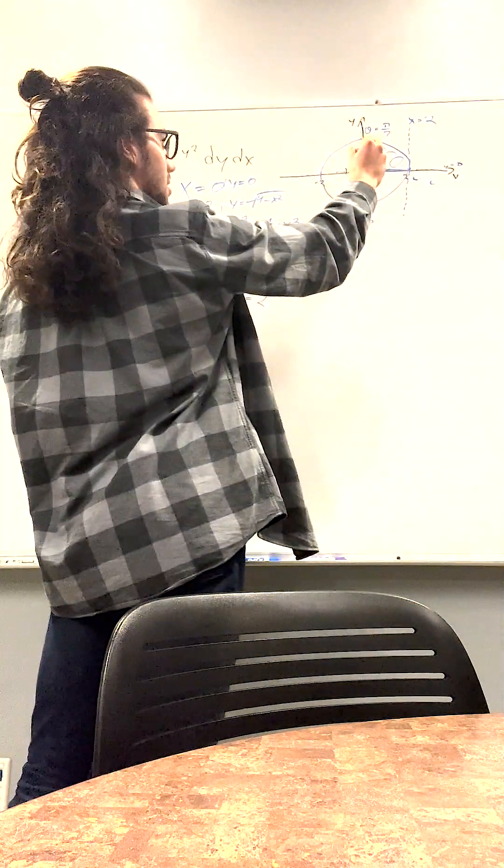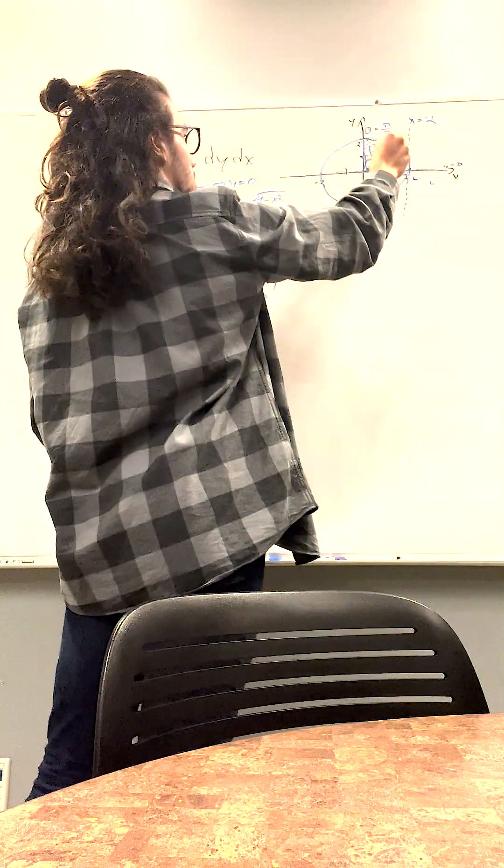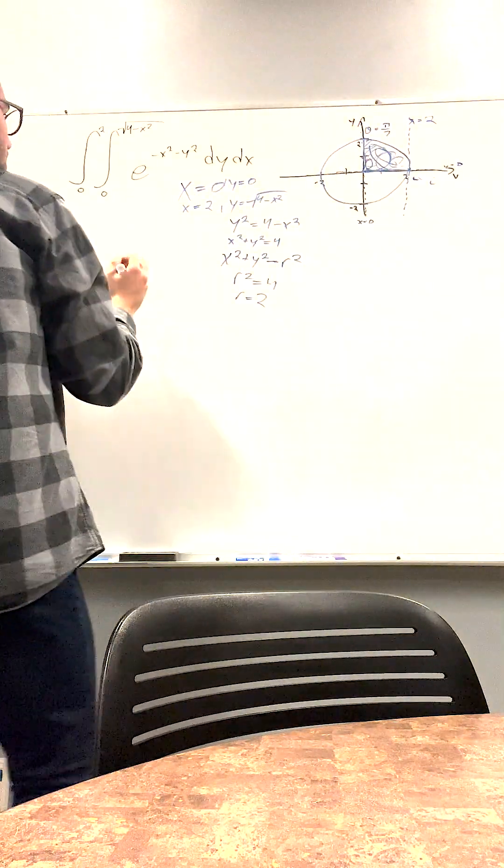So these are our bounds basically. And also our radius starts at r is equal to 0 because there's no secondary line. We're finding just this whole corner section.